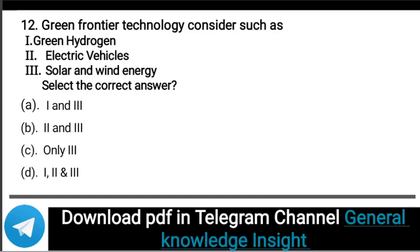Next question: Green frontier technologies considered include: one, green hydrogen; two, electric vehicles; three, solar and wind energy. Select the correct answer. The correct answer is option D — green frontier technologies include all three: green hydrogen, electric vehicles, and solar and wind energy.